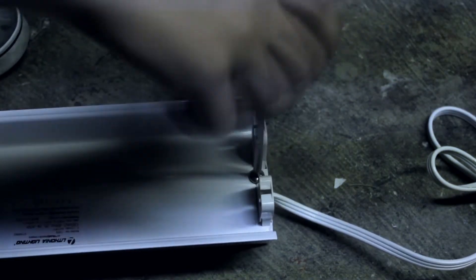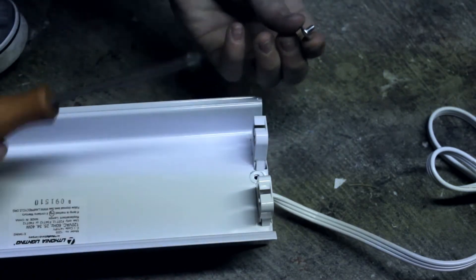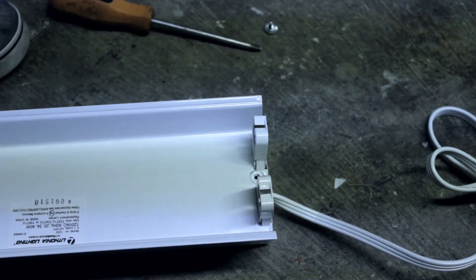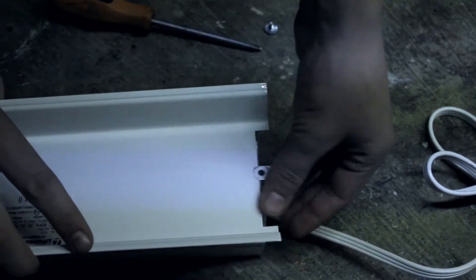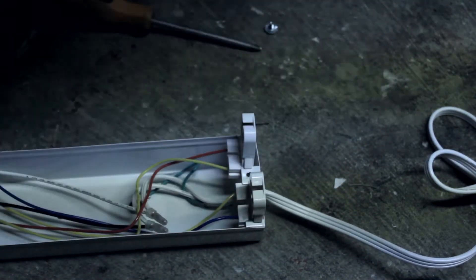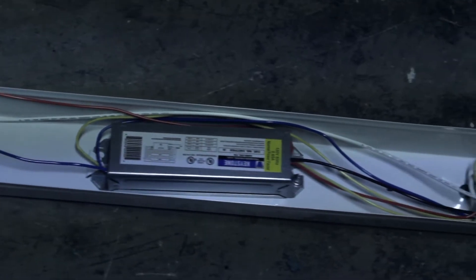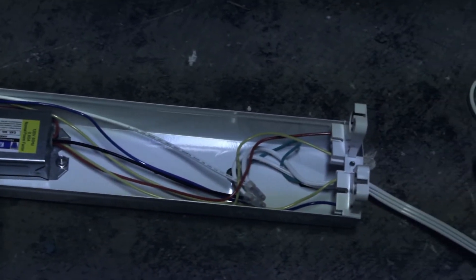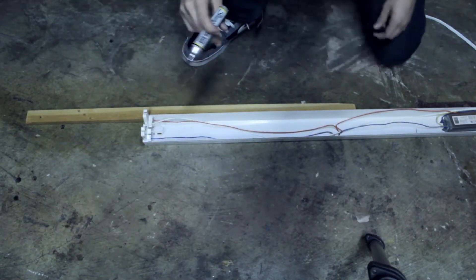First, what you want to do is remove the screw at the top and bottom of the light fixture. Once you do that, you can remove the panel on top. This will reveal the inside wiring and it looks a lot like this. If it doesn't look like this, you probably got a different type of light fixture. Make sure that your cord is unplugged because you don't want to electrocute yourself.